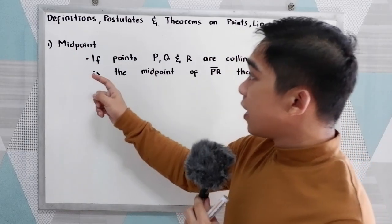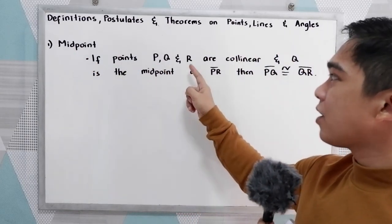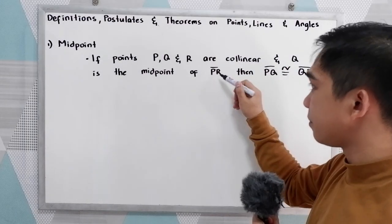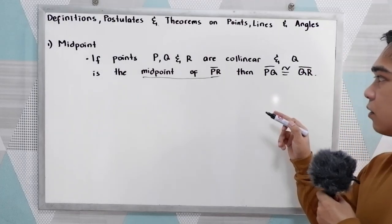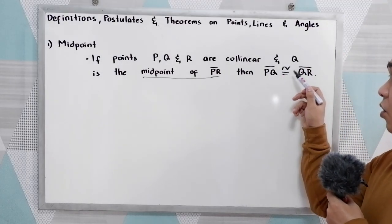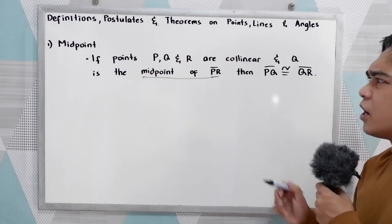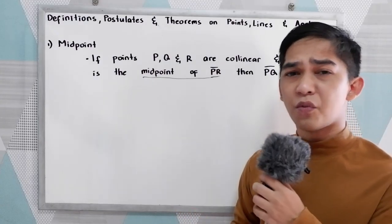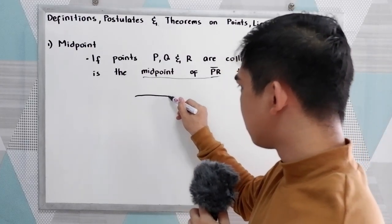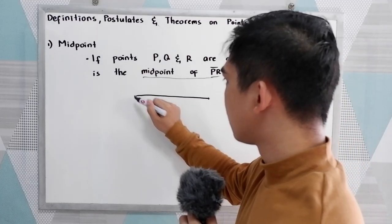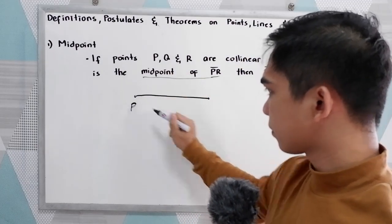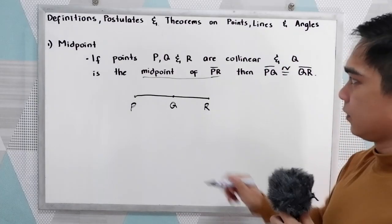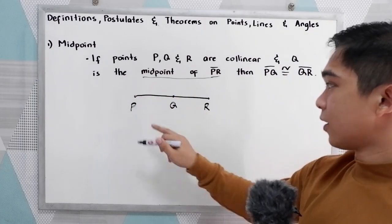We have the midpoint. If points P, Q, and R are collinear and Q is the midpoint of P, R, then segment PQ is congruent to segment QR. So when we say collinear, the points lie in the same line. So if we're going to draw, let's say this is our P, then Q, and R. Q is the midpoint of P, R.